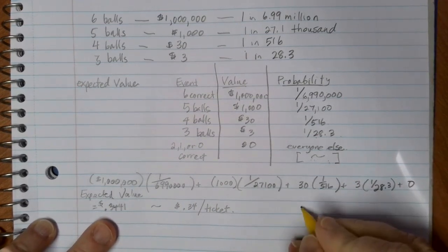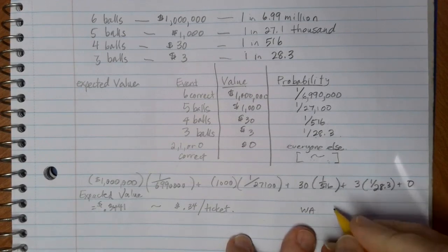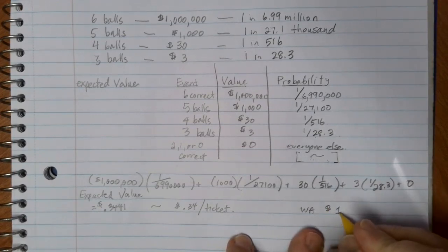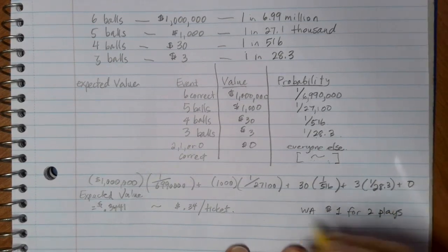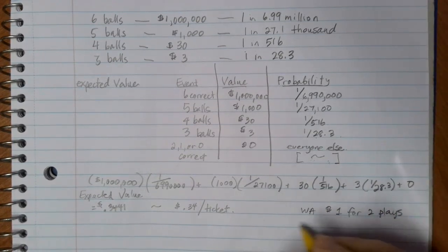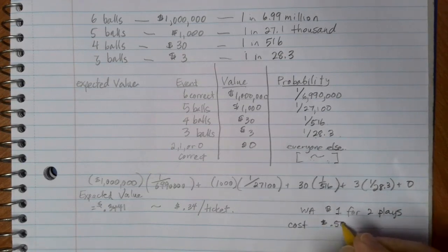Now, in Washington State you can pay $1 for two plays, so that means each lotto ticket is going to cost you 50 cents to play.